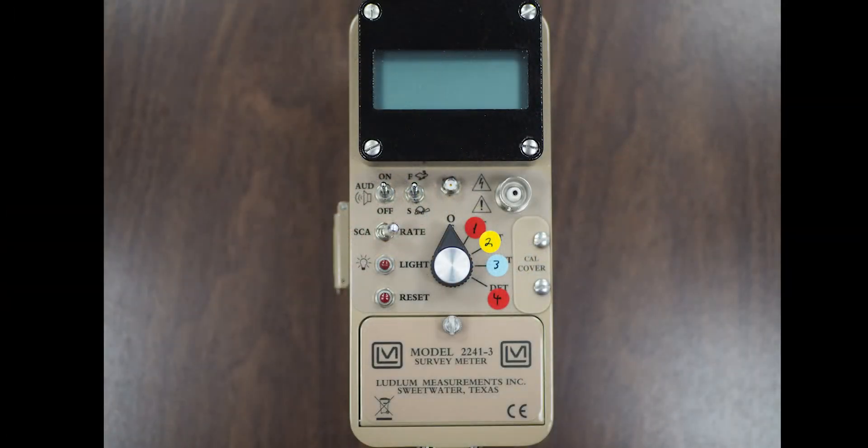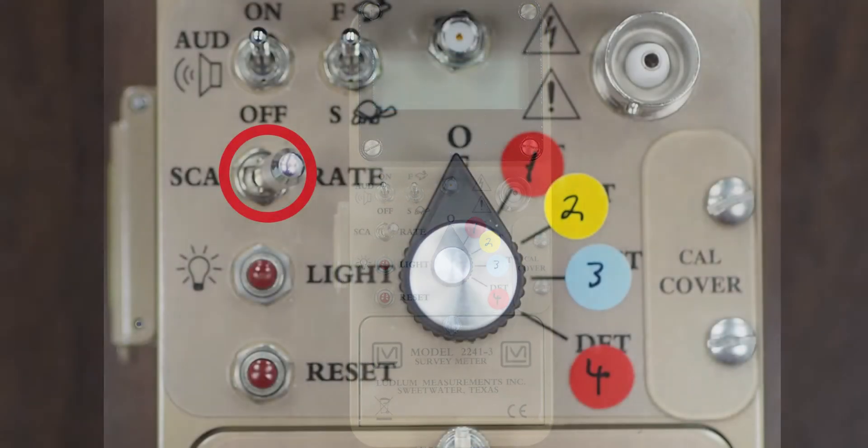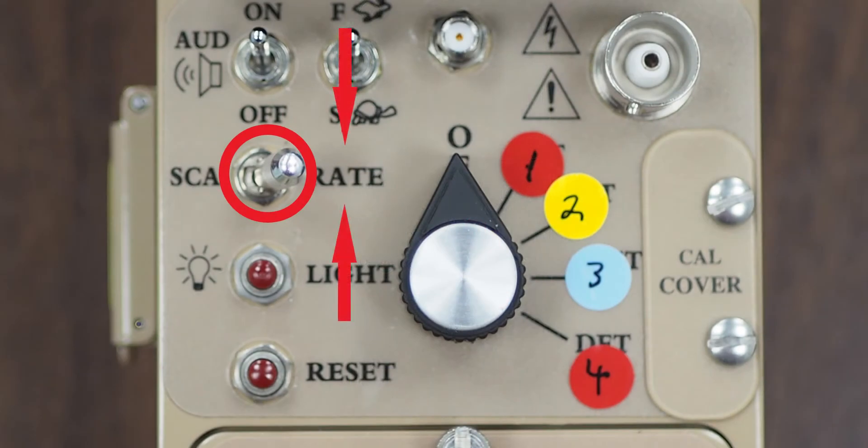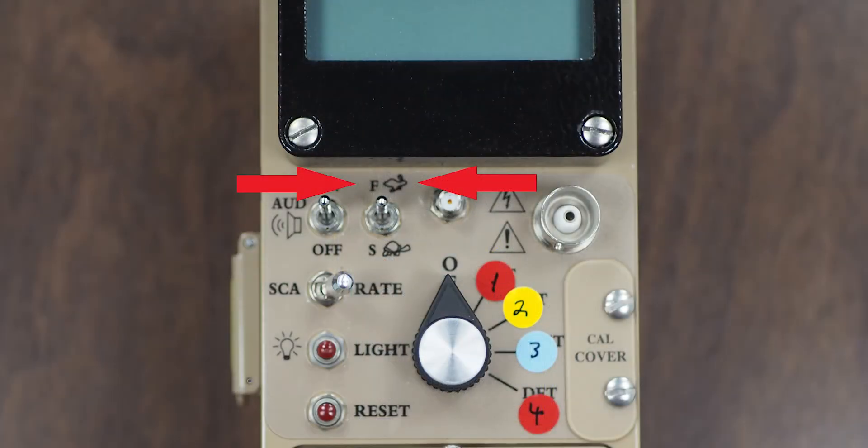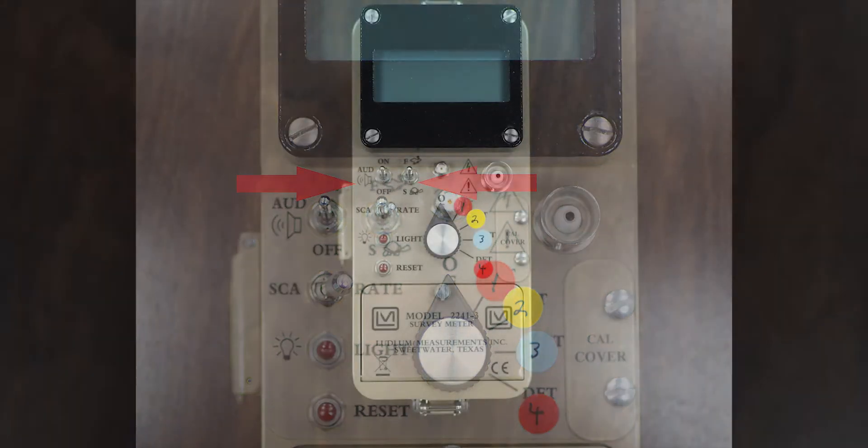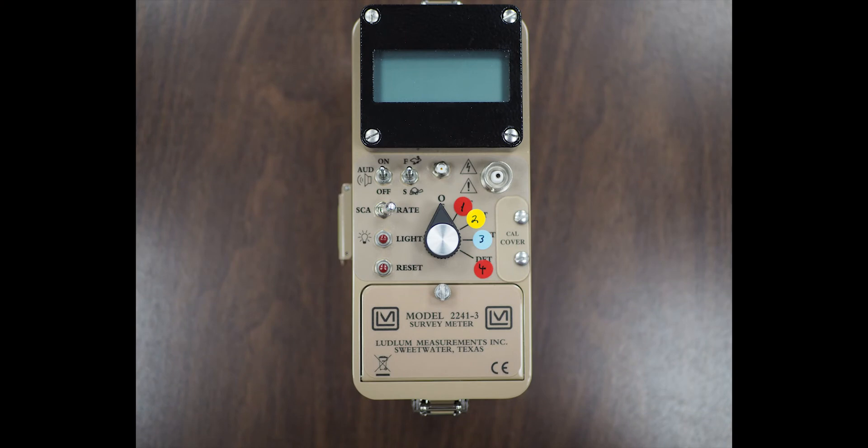A couple of notes on the controls. Most first responders typically only use the rate mode and don't use the scalar mode. By the same token, most first responders typically only use the fast time constant and don't use the slow time constant. But your local procedure should take precedent.